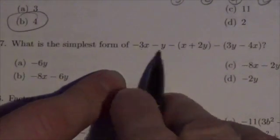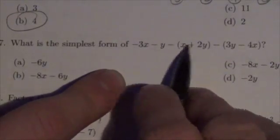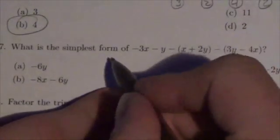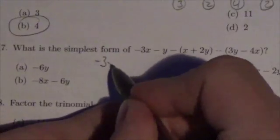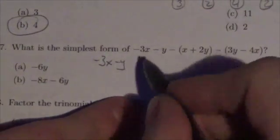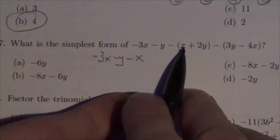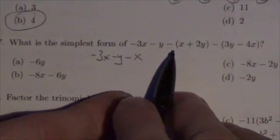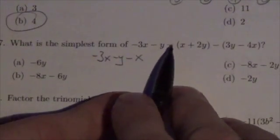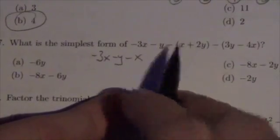I've got negative 3x minus y. What happens when I take this negative and subtract this? I'm going to rewrite this as negative 3x minus y. Most people have no trouble seeing that's going to be minus x, but what a lot of people will end up doing is they won't distribute the negative to that 2y.